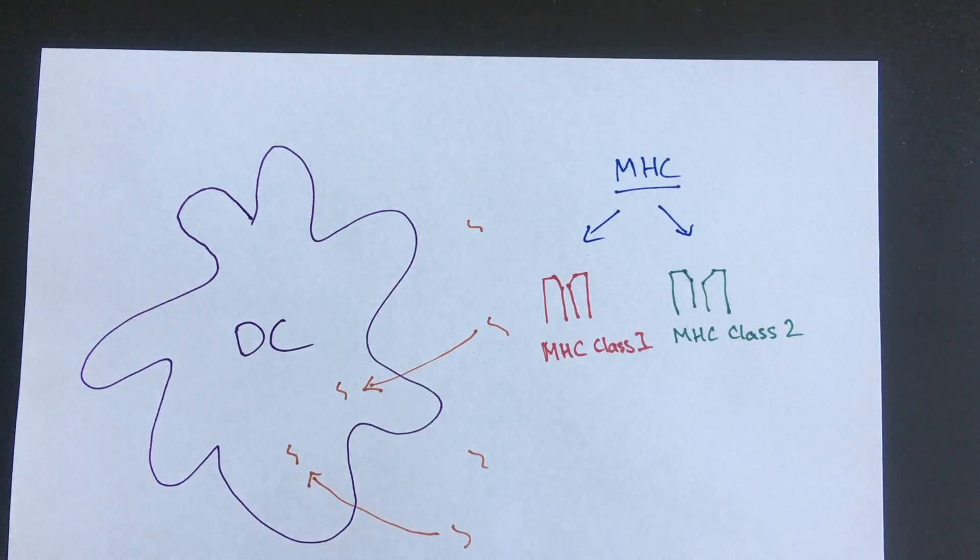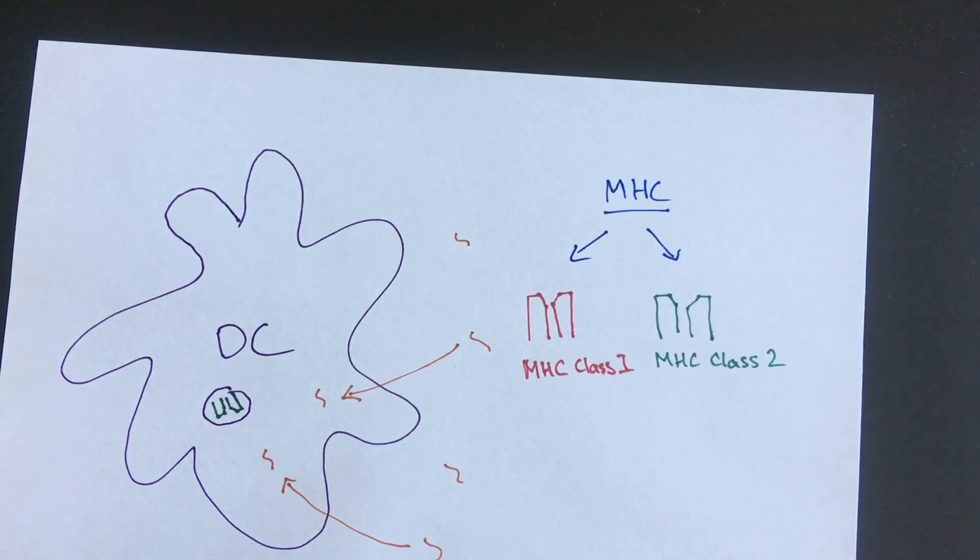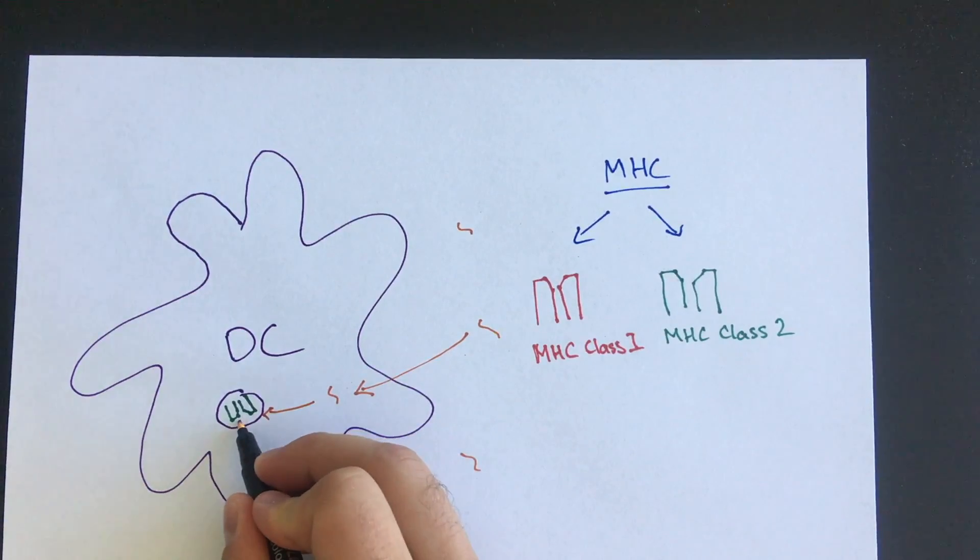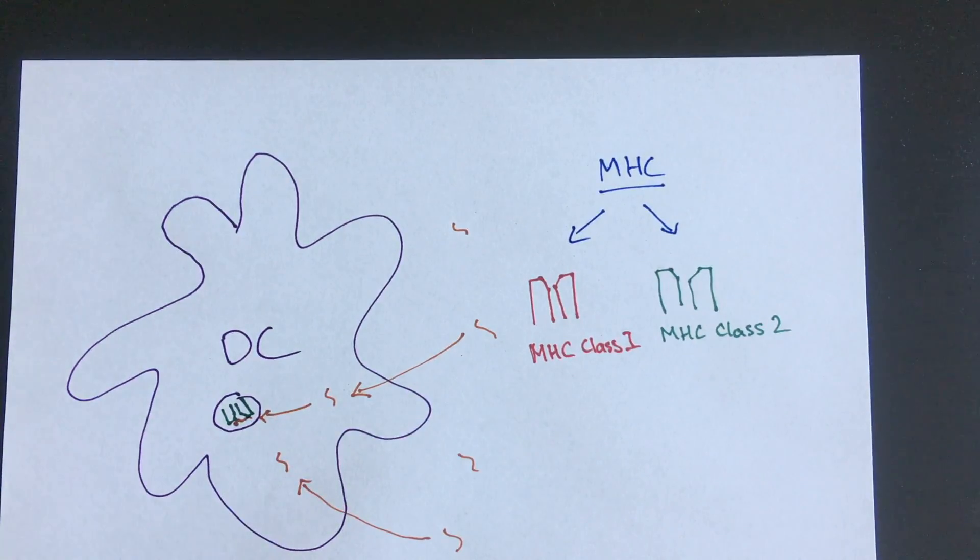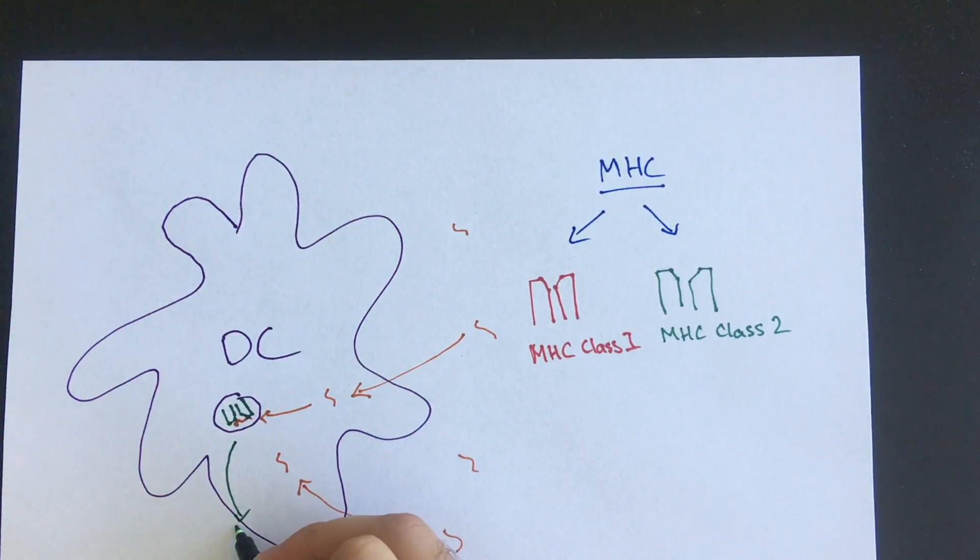In this instance, peptide antigens that are endocytosed by the dendritic cell are processed within the cell and then form a complex in vesicles containing MHC class 2 molecules. This complex of MHC and peptide antigen is then transported to the cell surface and expressed.